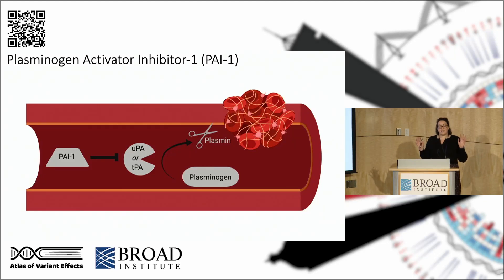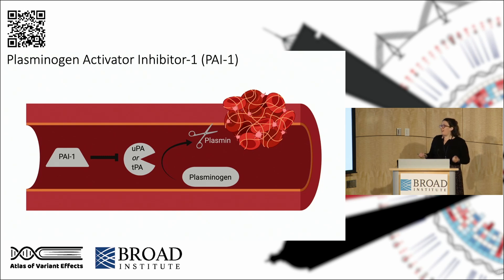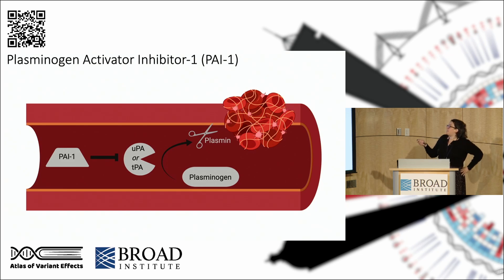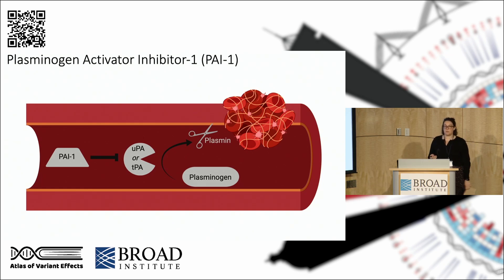PAI-1 is a key regulator of fibrinolysis, or the enzymatic breakdown of fibrin clots. When you form a blood clot, you want it to stay around long enough for wound healing, and then we want that clot to go away. That's primarily done by the enzyme plasmin, the activated form of the zymogen plasminogen. Plasminogen is activated by two serine proteases, UPA and TPA, and PAI-1 is a stoichiometric inhibitor of UPA and TPA, so it's putting the brakes on this fibrinolytic process.